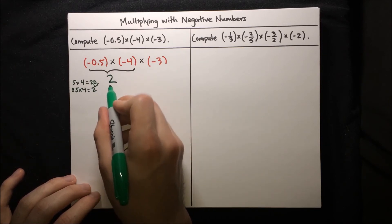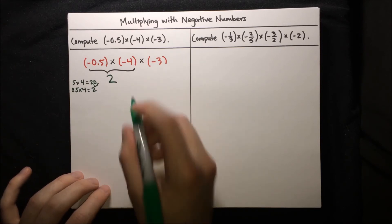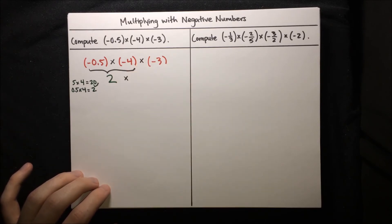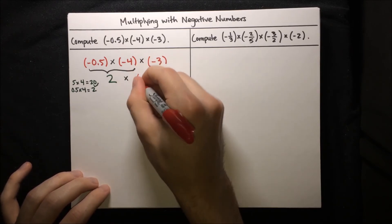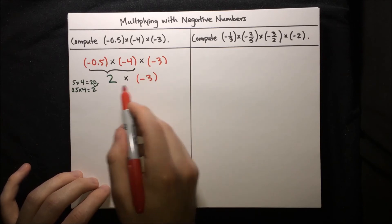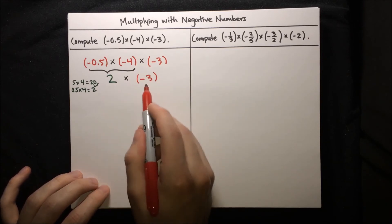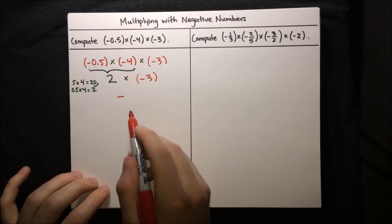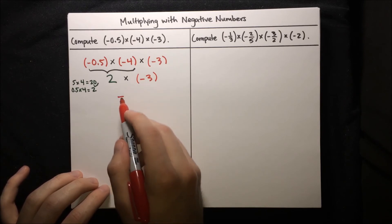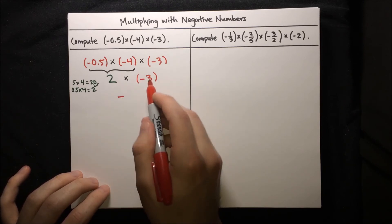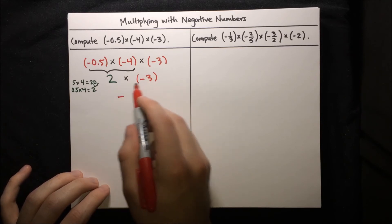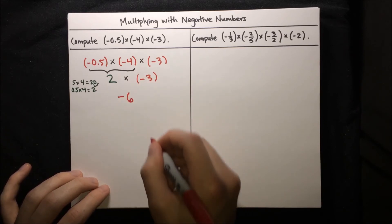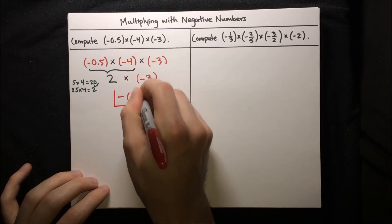Now take positive 2 and multiply it by negative 3. There's just a single negative number in this product, so nothing cancels it — the result is negative. Negative of 2 times 3: 2 times 3 is 6. So the final result is negative 6.